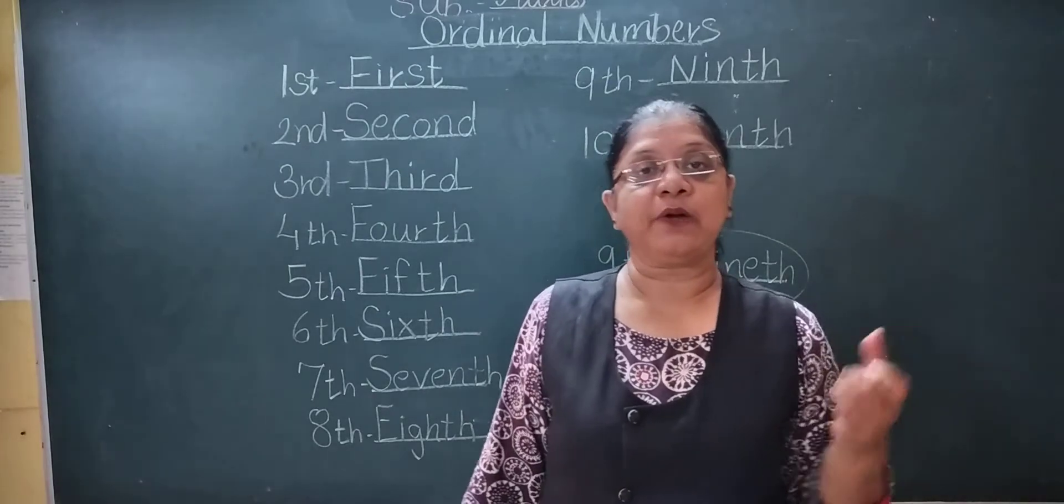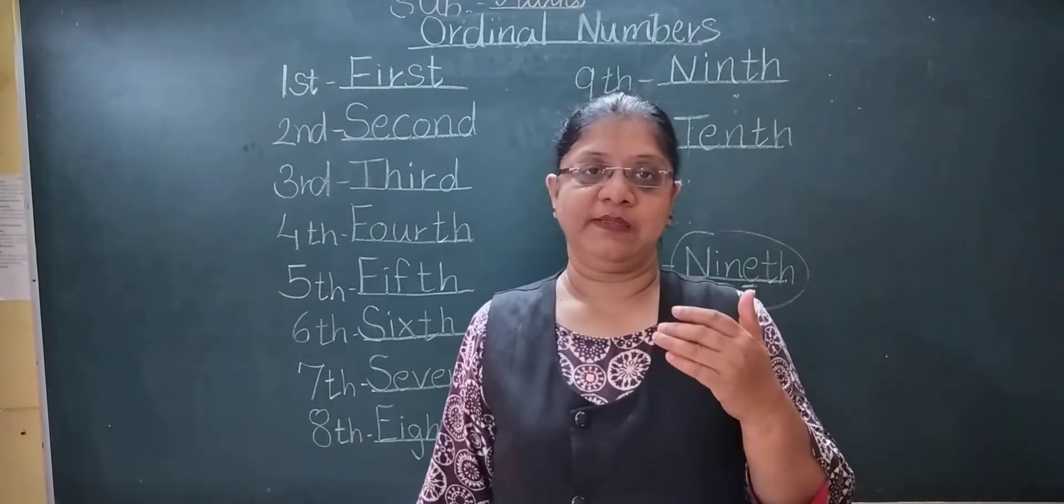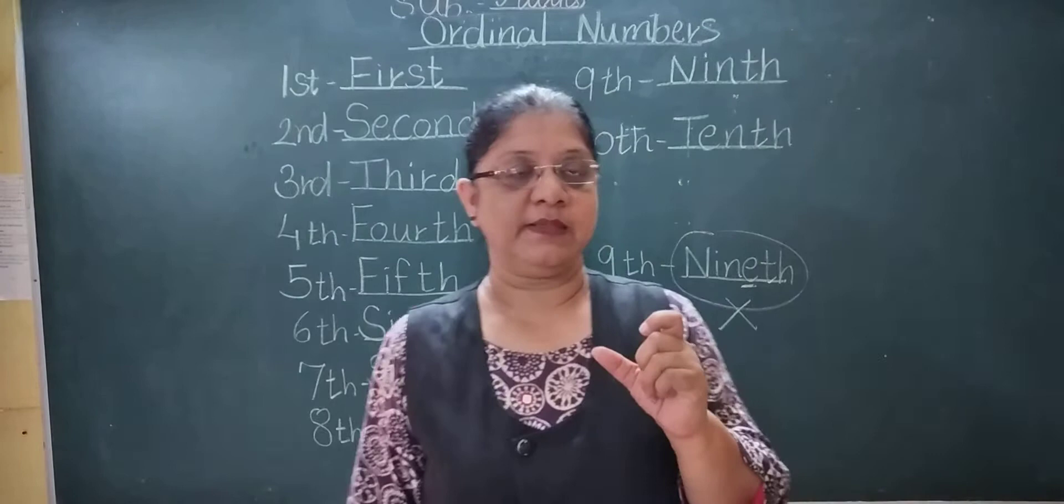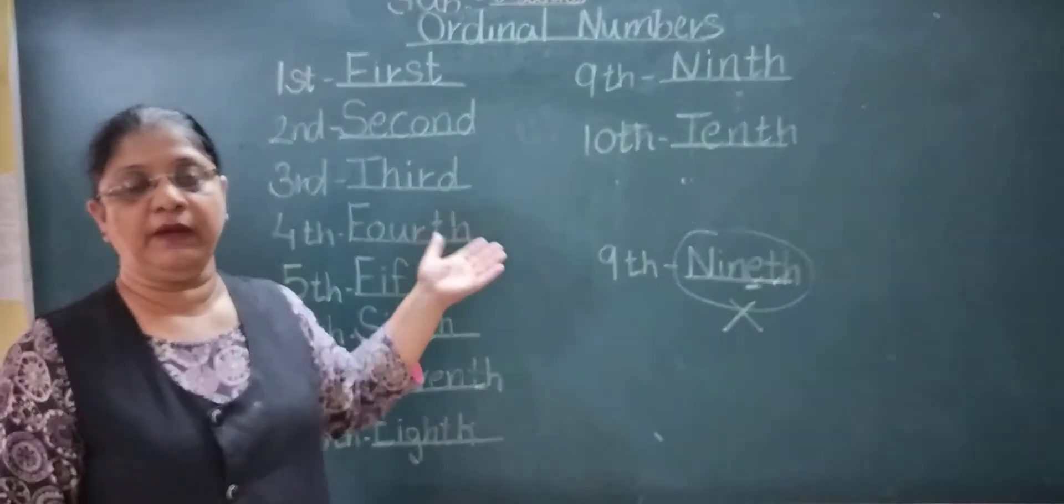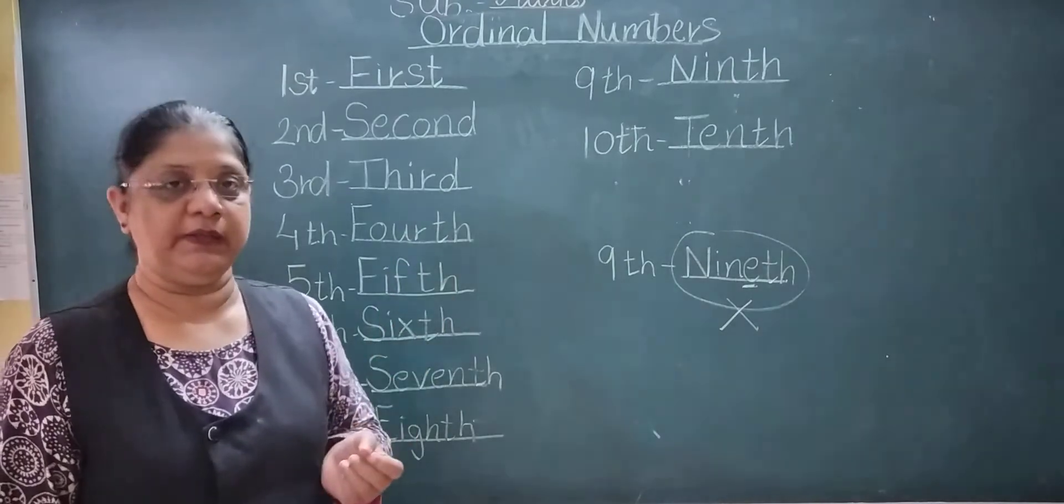Thousand, these are called cardinal numbers. Cardinal numbers. And see, first, second, third, fourth, fifth, these are called ordinal numbers.